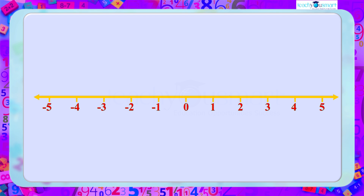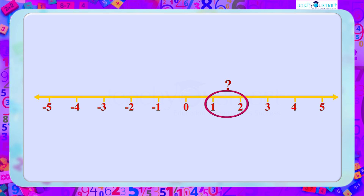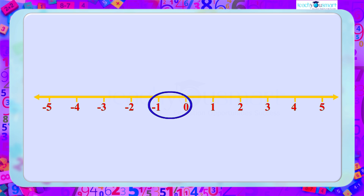We know the natural numbers between one and five are two, three, and four. Between one and three there is only one natural number: two. But how many natural numbers lie between one and two? Obviously none. Similarly, the integers that lie between minus two and one are minus one and zero. Is there any integer between minus one and zero? No, there are no integers between minus one and zero.